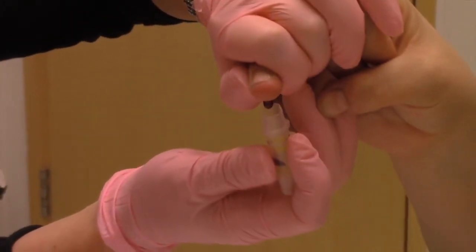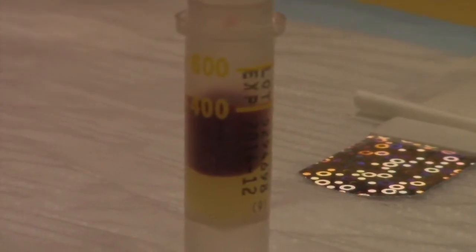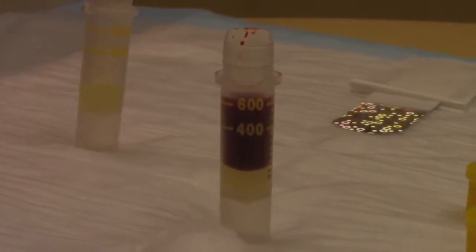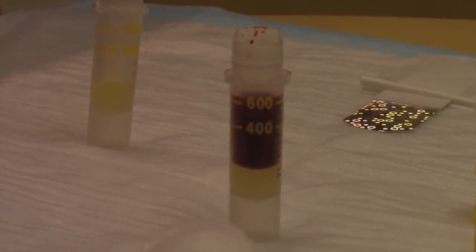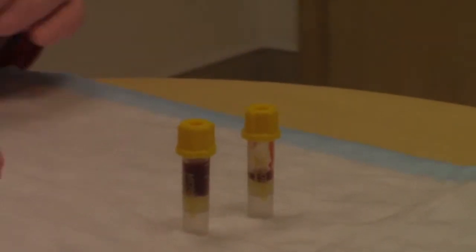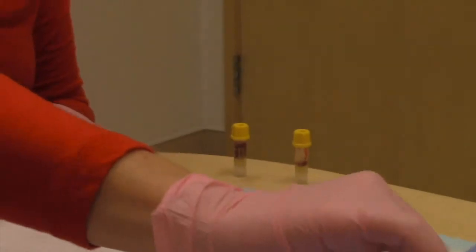We would like for the tube to be filled to the 400 microliter line at a minimum. However, filling the tube to the 600 microliter line is ideal. If there is enough blood to fill two tubes this can be done as well. Please return the tube even if you are unable to fill it to the 400 microliter line.